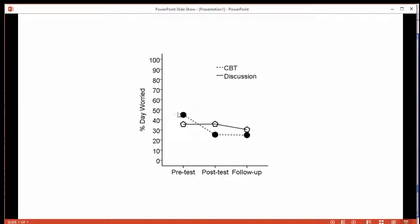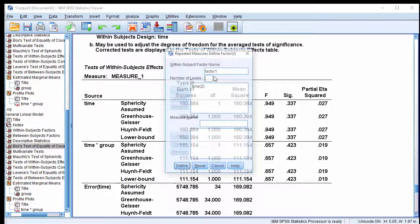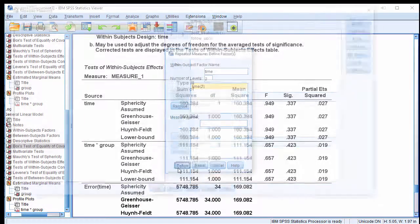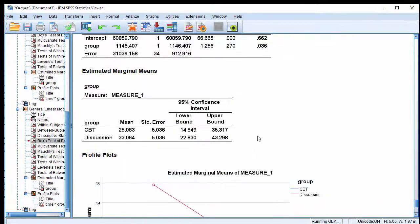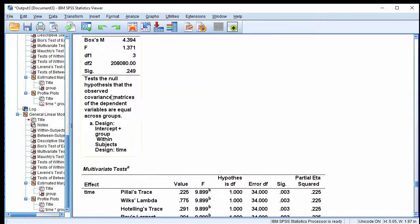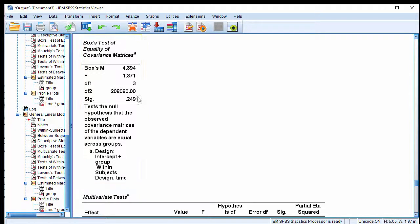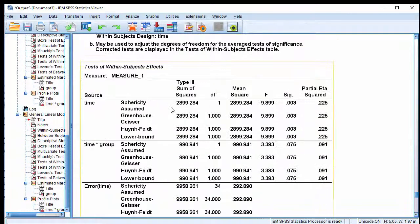The final analysis is going to be pre-test to follow-up. Analyze, General Linear Model, Repeated Measures. Keep that at 2, Define. It's pre-treatment and follow-up. This is the third and last one. Click OK. Tests of equality of covariance matrices are satisfied. And tests of within-subjects effects, time by group interaction, also not statistically significant. F 3.383 and p equal 0.075.